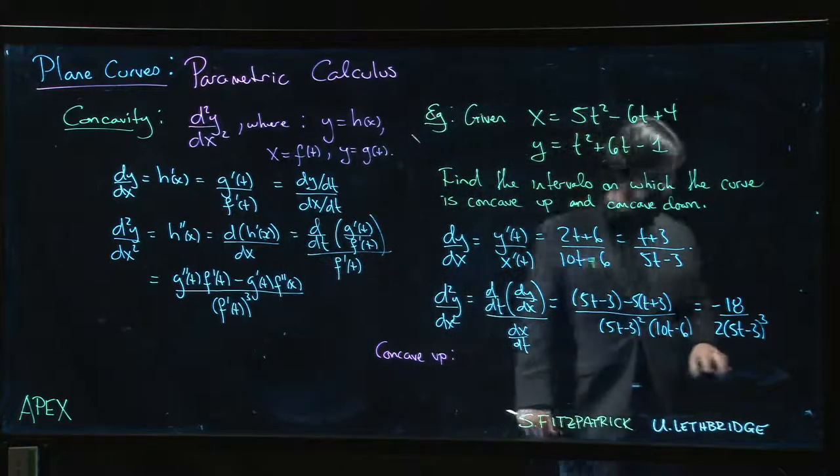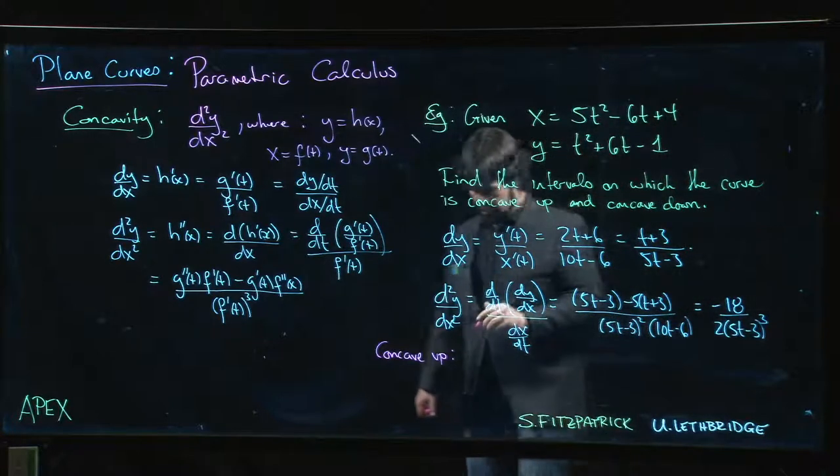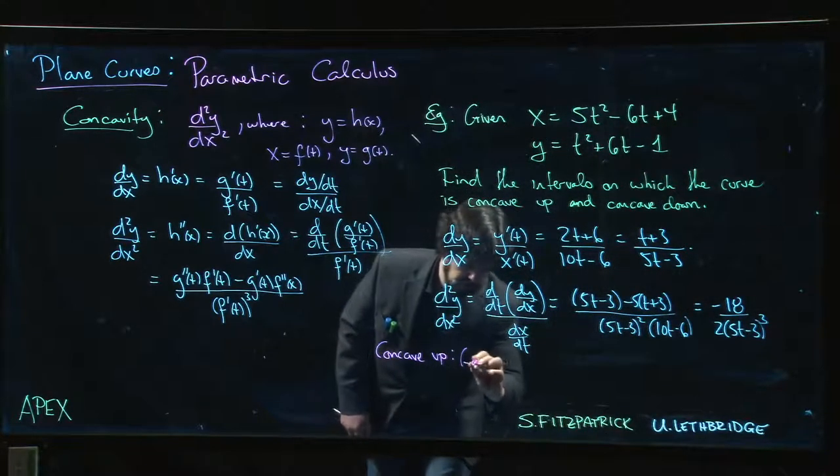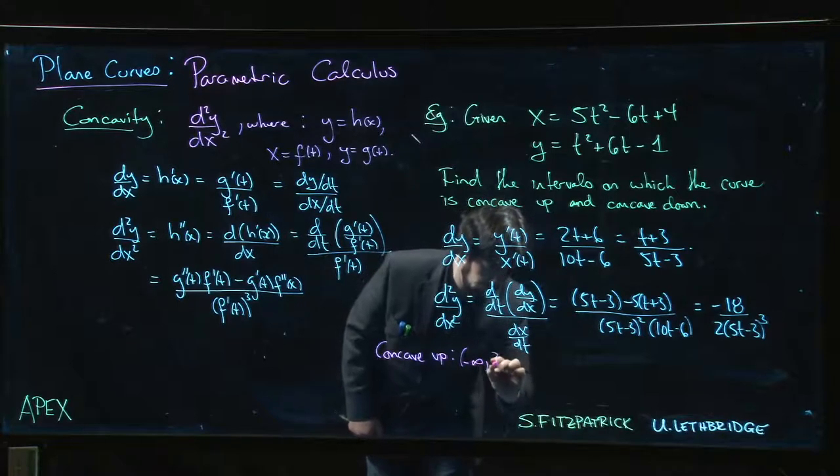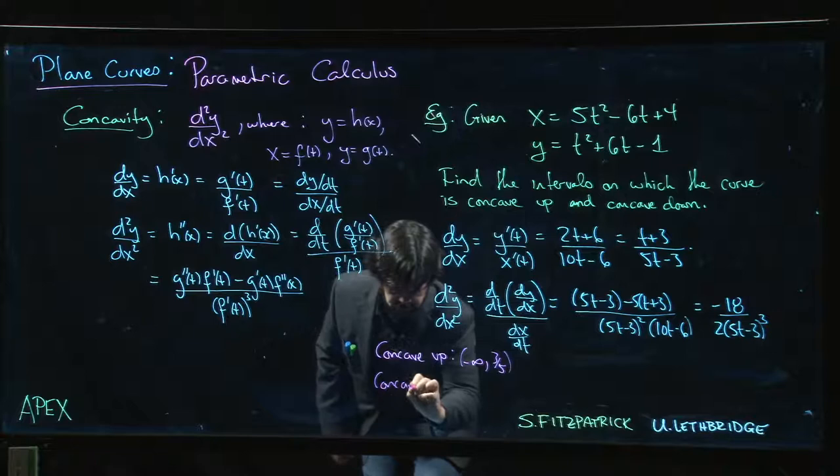So if t is less than 3 over 5, numerator and denominator are both negative, so it's concave up from minus infinity to 3 over 5, and it's concave down from 3 over 5 to infinity.